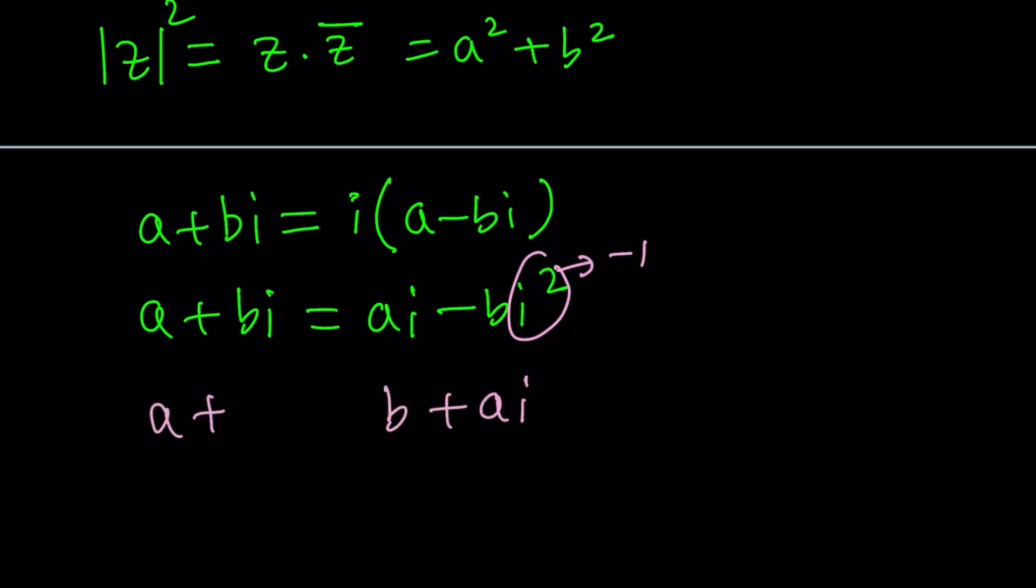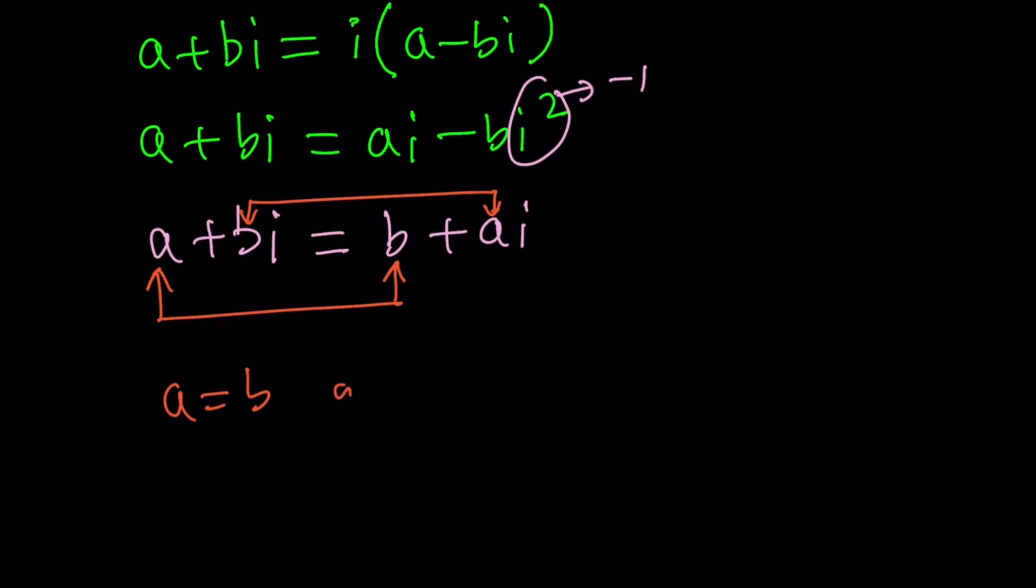We got something interesting: a plus bi equals b plus ai. What do you know about the equality of two complex numbers? Their real parts are equal and their imaginary parts are equal, and both have to be satisfied. So this means a equals b and b equals a, but a equals b implies b equals a, so we just need a equals b. Great.